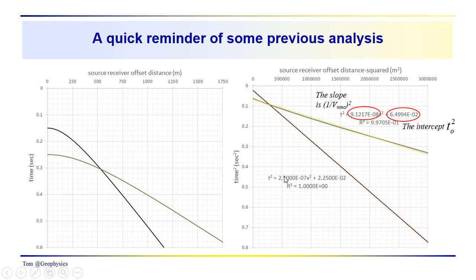The same down here, this would be 1 over VNMO for the first reflection event here, the slower, the lower velocity reflection.